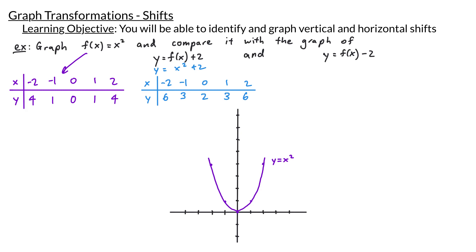Comparing the two tables, all of the y values are increased by 2 in the new table. Originally the y values were 4, 1, 0, 1, 4; now they are 6, 3, 2, 3, 6. Plotting the points (-2,6), (-1,3), (0,2), (1,3), (2,6) and connecting them, we get the graph of y = x² + 2. This blue graph is essentially the purple graph moved up 2 units — we call this a shift up 2 units.